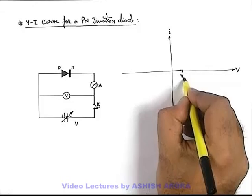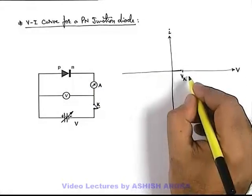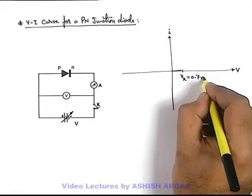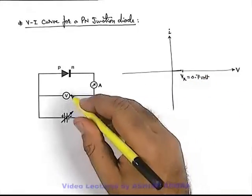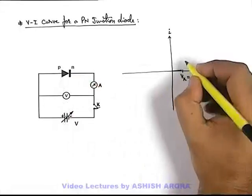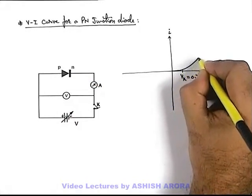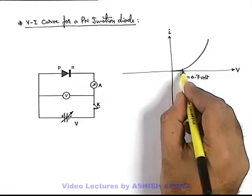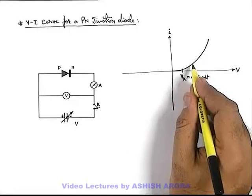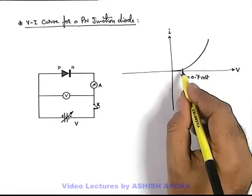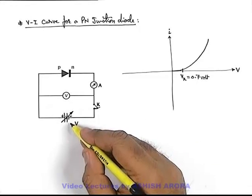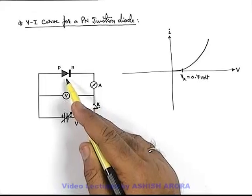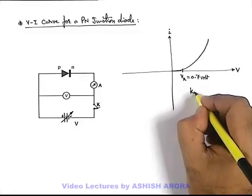At a point called Vk, say if we are using a silicon diode, Vk is 0.7 volt where the electric field exceeds the barrier potential. Afterwards, when the potential increases in forward biasing, current also increases. This point is when the diode is in forward biasing and the external electric field overcomes the internal electric field of the PN junction, allowing current to flow. This is called knee point voltage.